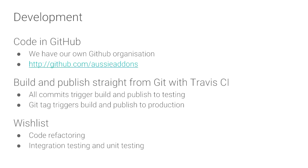For our development wish list, we'd really like to do some code refactoring because a lot of the code is old. We'd also like to include integration testing and unit testing — specifically integration tests that hit the streaming services, get a streaming URL, and attempt to play it as a full end-to-end test. The challenge is that all Travis CI servers are in the US, so geo-blocking would cause Australian services to fail. More thought is needed there.